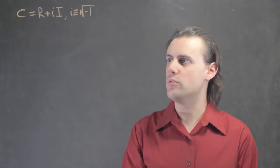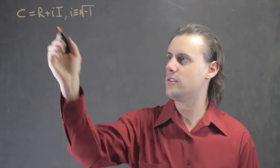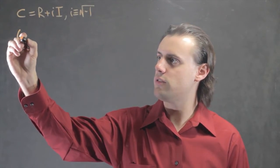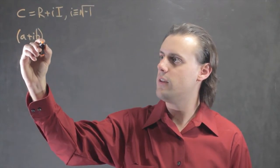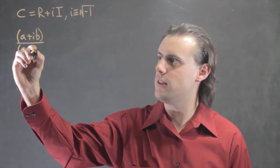In order to calculate a quotient in terms of this standard form, I start with a general ratio: a plus ib, divided by another complex number, c plus id.